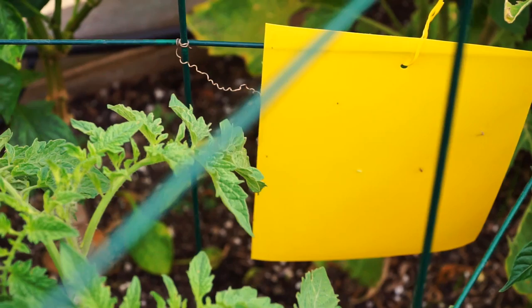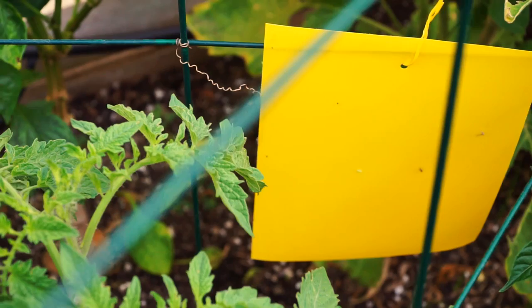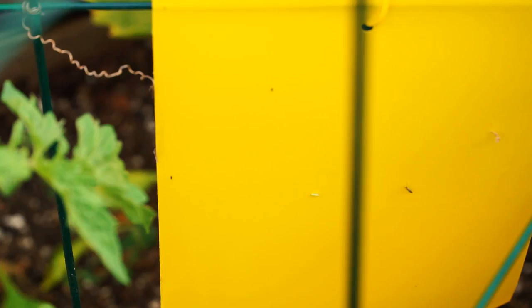You can see some more aphids here, the green-colored ones. Even in the fall season you'll have a problem with aphids on your cabbages and other brassicas, so this is a good idea to get rid of those insects in your garden.